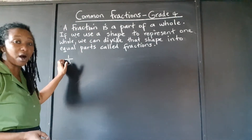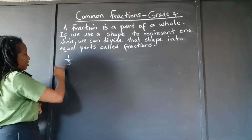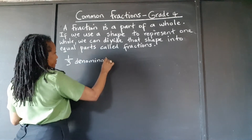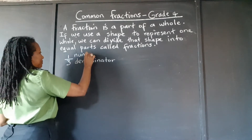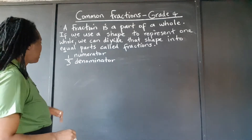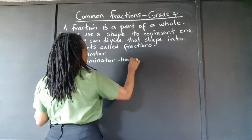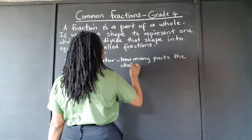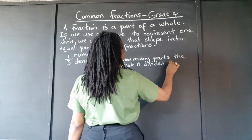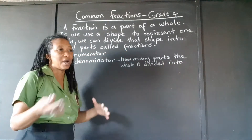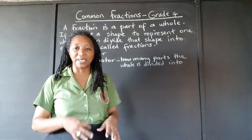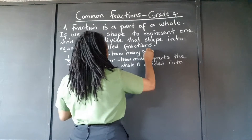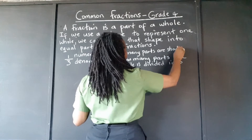This is how we write common fractions — simple fractions. We have the number at the top and the number at the bottom. The number at the bottom is called the denominator, and the number at the top is the numerator. The denominator tells how many equal parts the whole is divided into. The numerator tells how many parts we are shading from the whole, or how many parts are being taken from the whole.